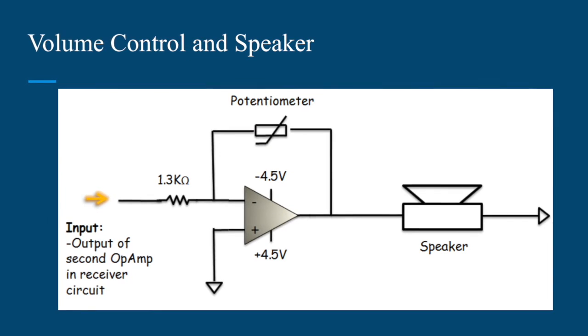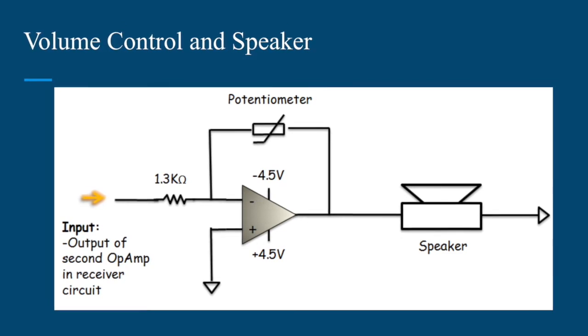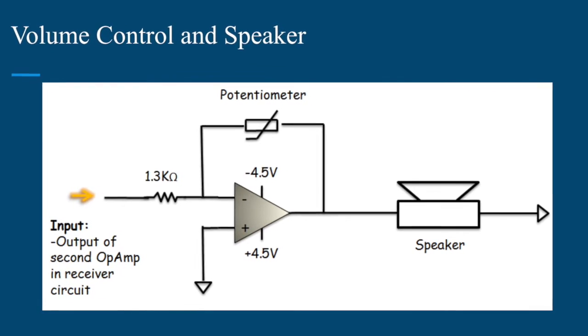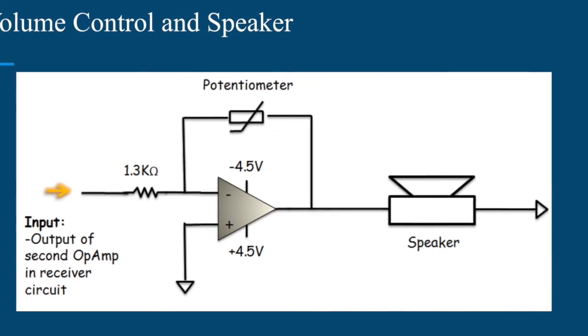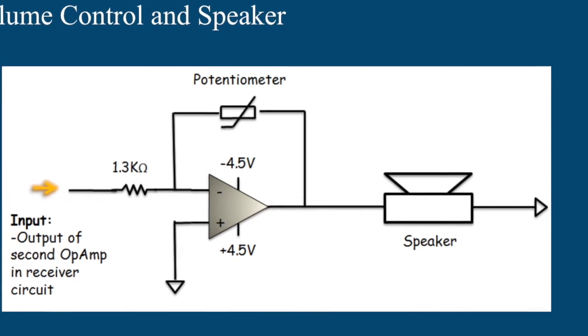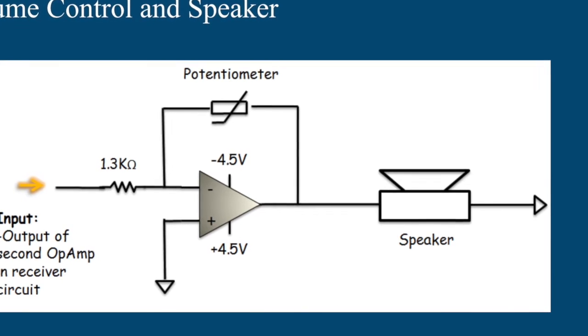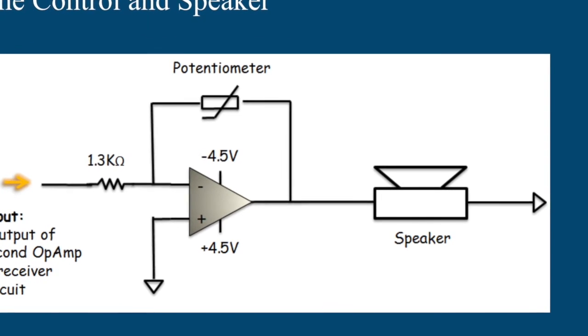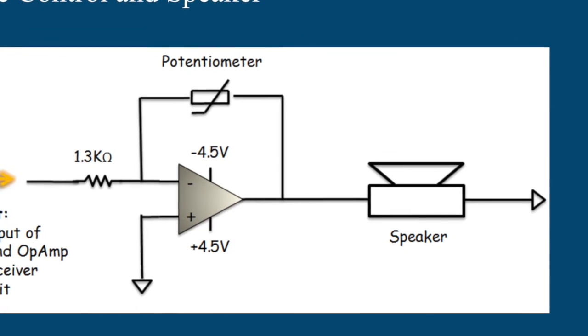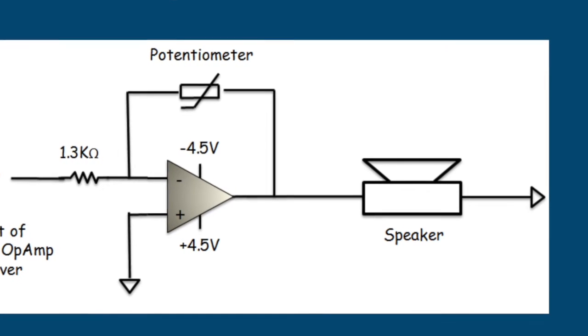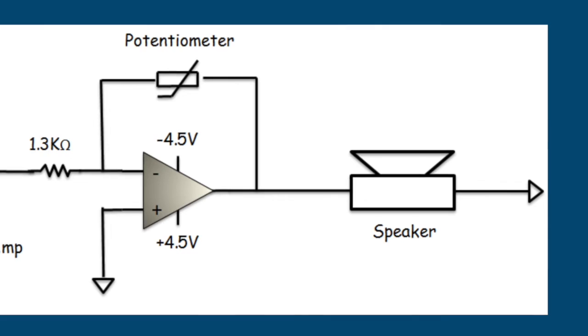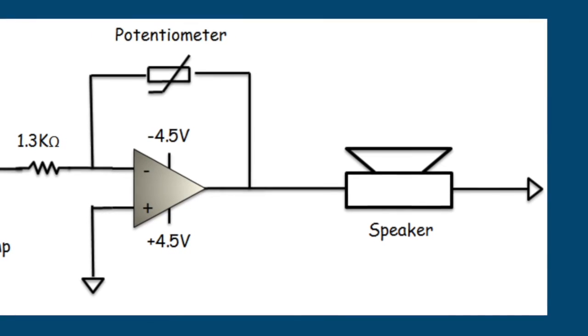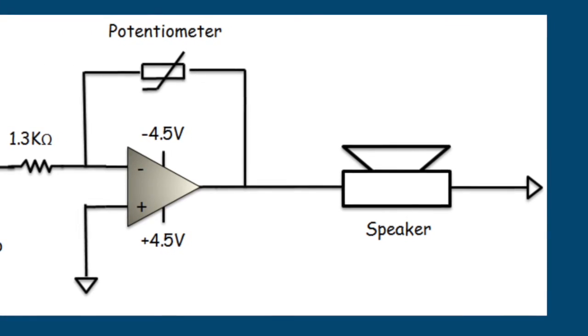This is the schematic for our volume control and speaker in the receiving circuit. The signal is fed into an inverting op amp where once again the gain is equal to the ratio of the resistance of the potentiometer over the 1.3 kiloohm resistor. As the resistance of the potentiometer goes to zero the gain will also go to zero so there will be no noise from the speaker. The output of the op amp is then fed into the speaker.